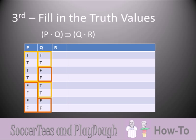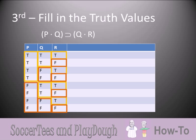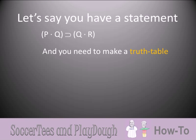When we move to the R column, we take that two from the Q column and divide it in half again to get one — so we put one T, one F, one T, one F, and so on until we finish the column. Once again, half the rows are true and half are false. If you pay close attention, you'll see that we now have all eight possible combinations of truth values.